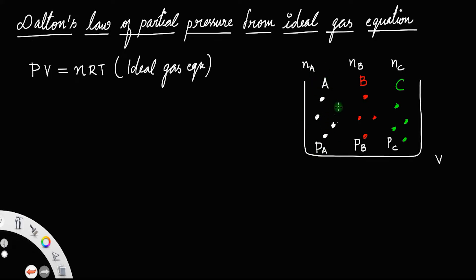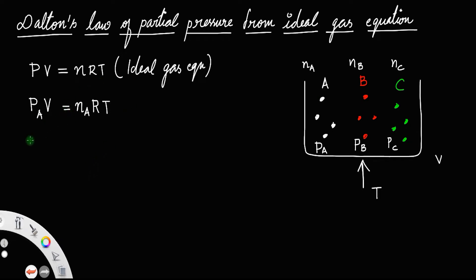Taking the ideal gas equation for gas A: the partial pressure of gas A times volume equals NA·R·T. Volume is the same for all gases since it is the volume of the container, R is a universal constant, and temperature is constant because the whole system is at temperature T. So we can write NA = PA·V divided by RT. Let us call that equation number 1.